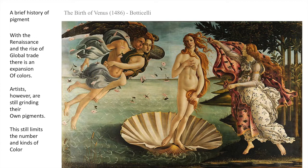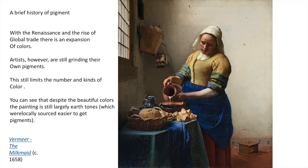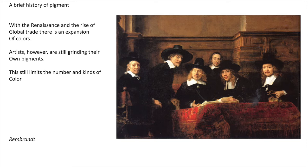With the Renaissance and the rise of global trade there's an expansion of colors, though artists are still grinding their own pigments and mixing them with oil or other mediums, which still limits the number and kinds of color available. Here's a Renaissance painting by Vermeer — you can see a good amount of color, but it's still fairly limited with a lot of earth tones. Here's a Rembrandt painting showing, in particular, the depiction of the so-called 'oriental' rug — colors that would not have been so easily available before.